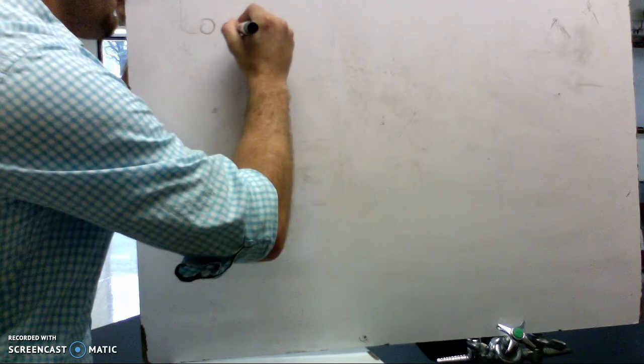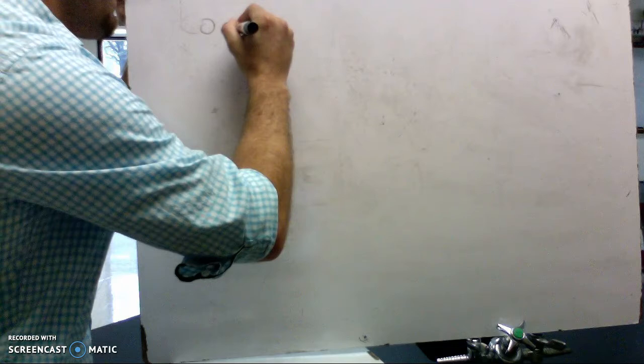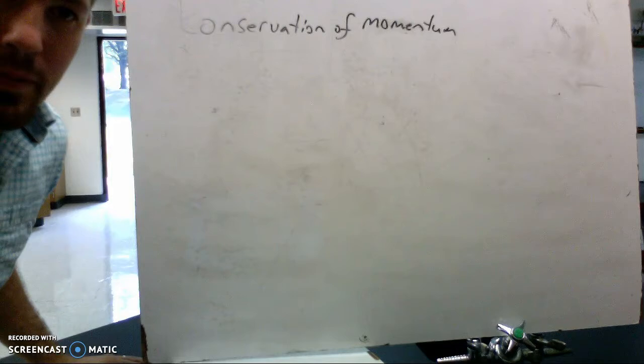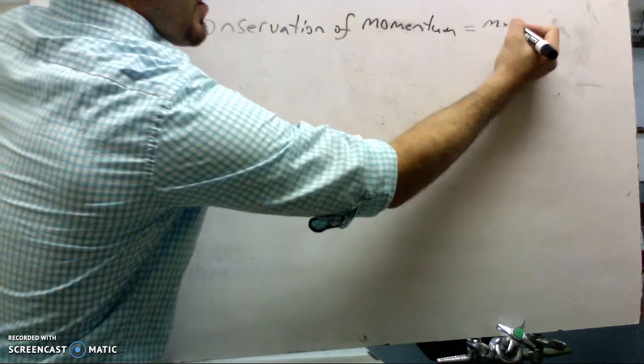What we're looking at is conservation of momentum. Momentum principles right here. Conservation of momentum. We need to remember that momentum is defined as mass times velocity. We measure mass in kilograms, we measure velocity in meters per second.